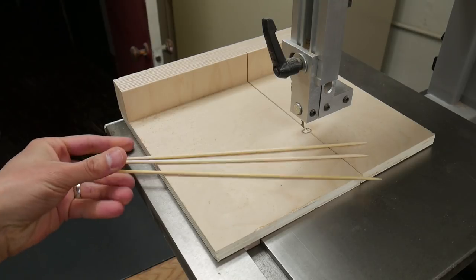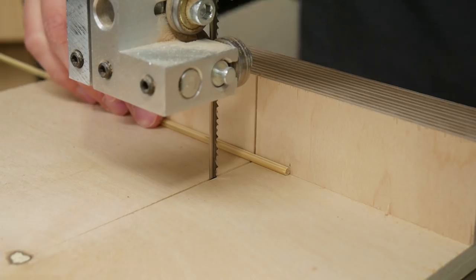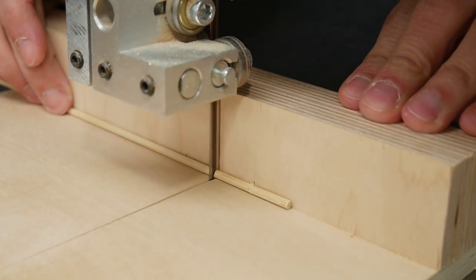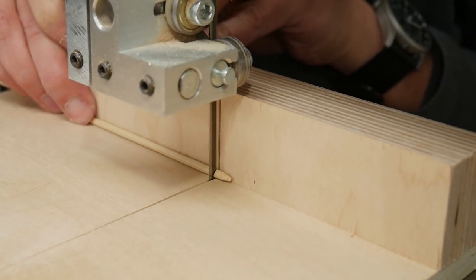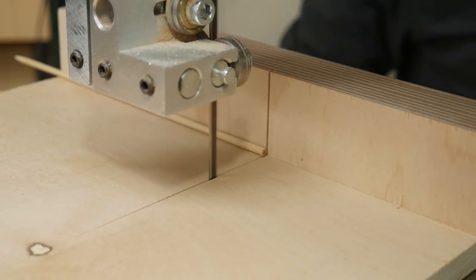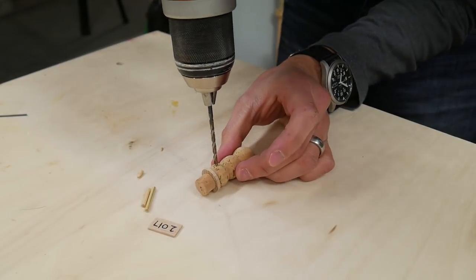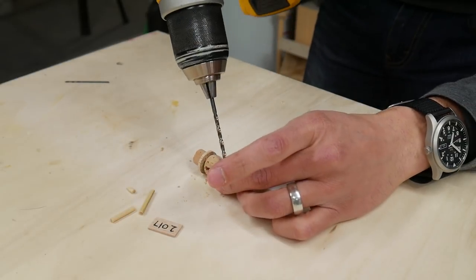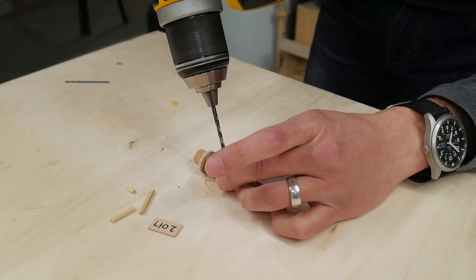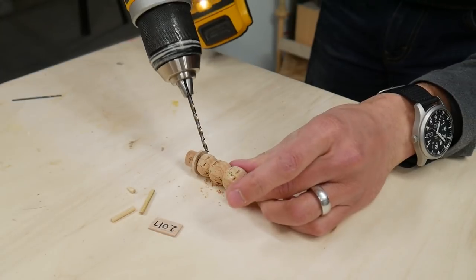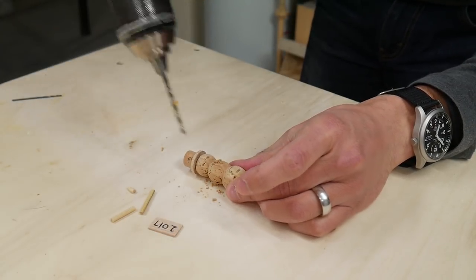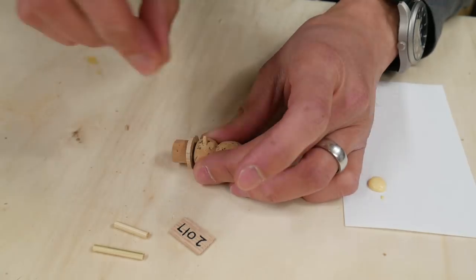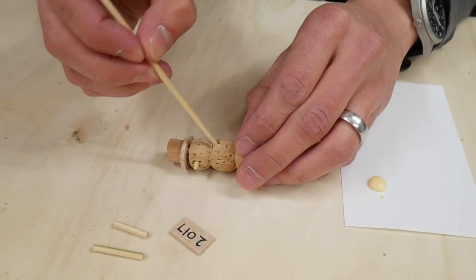Then I got some bamboo cooking skewers and cut some little arms for the snowman. I also cut off the pointing end of one of the skewers to use as a nose. I used a small drill bit to drill a hole for the nose and a hole on each side of the body for the arms. Then I used wood glue to glue the nose in place and glued the arms in place as well.